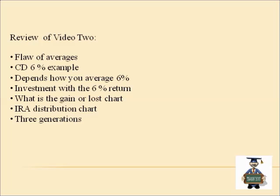This is the end of video two. Here are the quick highlights: we went over the flaw of averages, showed a CD earning six percent, and how you average a return to get six percent is very important — contrasting it to an investment with a six percent return. We covered a gain-or-loss chart with mental math, talked about IRA distributions and how a market correction can make a huge difference in your RMDs, and applied real-life numbers to three generations of retirees. If you have questions, take advantage of the Q&A, review your handouts, and you can always go back and review the video. Looking forward to seeing you at the end of part three — thank you very much.